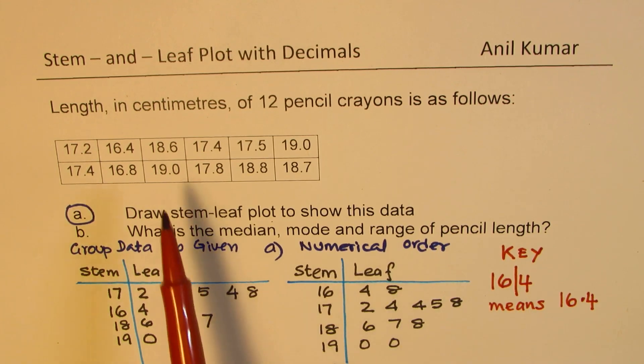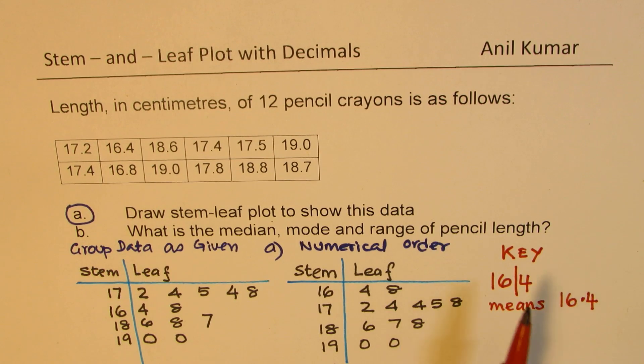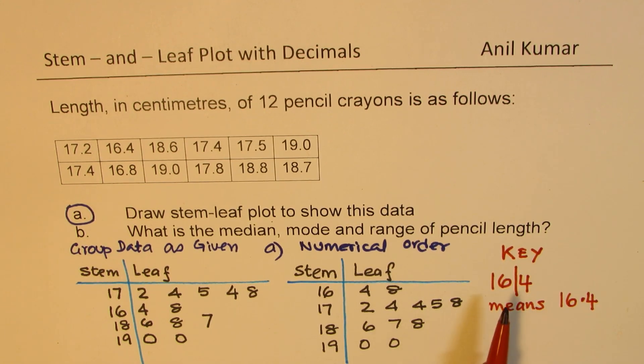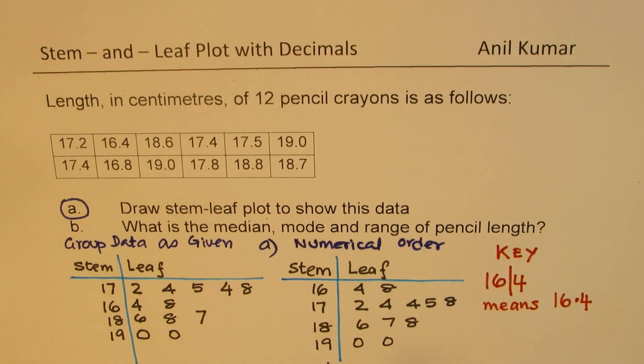So that is how you can read the data. So if you do not include key, then you are actually not representing the data given in the question. So it is the important part which sometimes is forgotten. So that will be a huge mistake. So that answers your first question, which is draw stem and leaf plot to show this data.